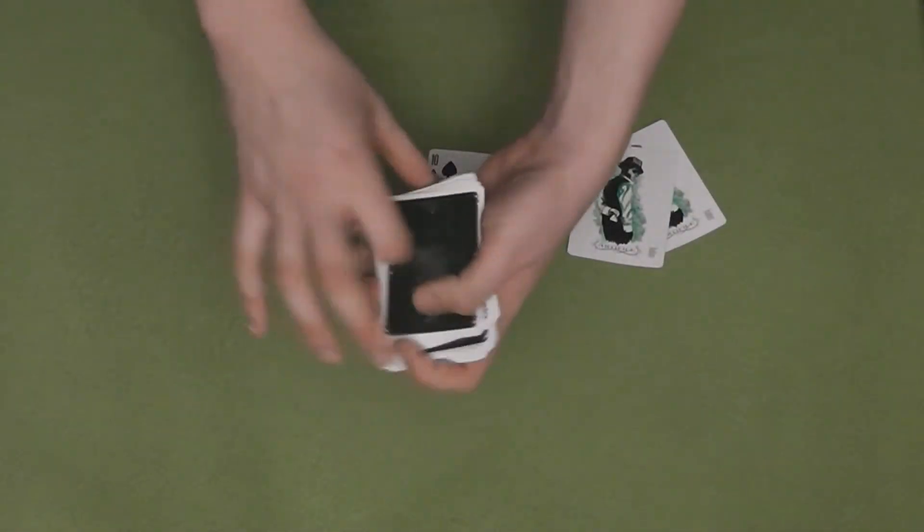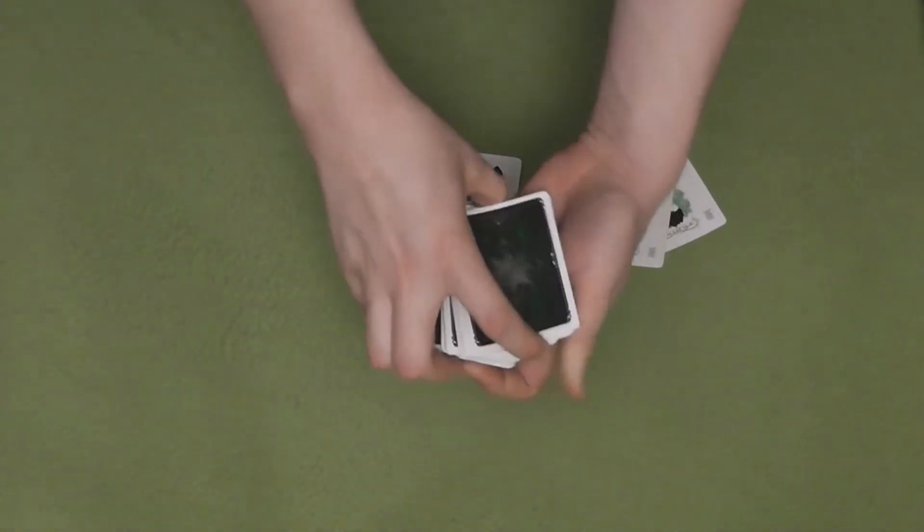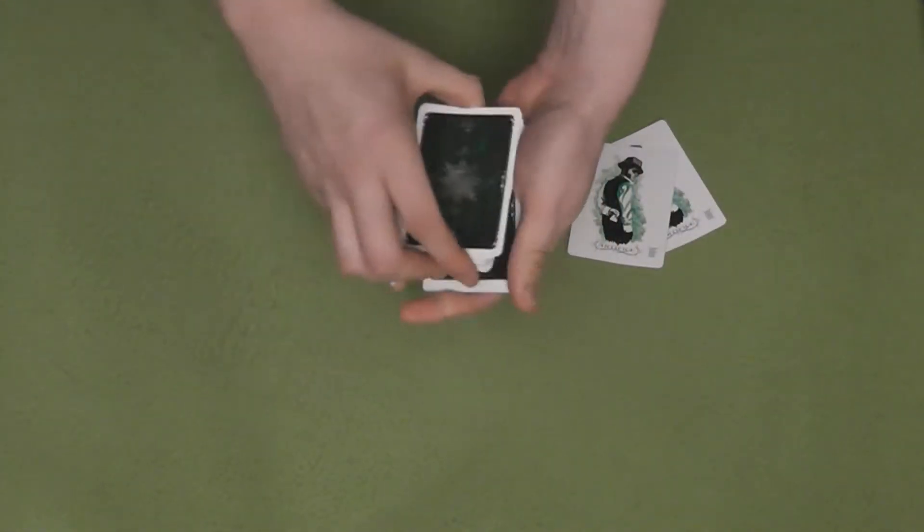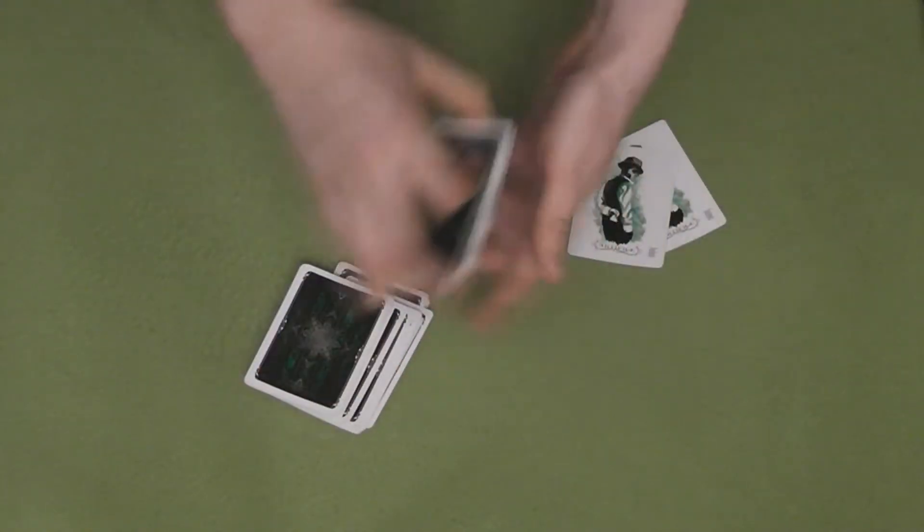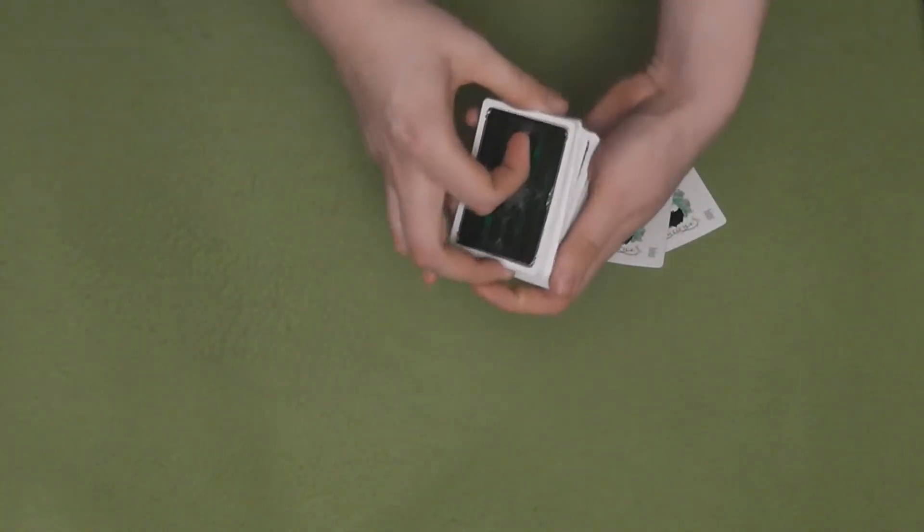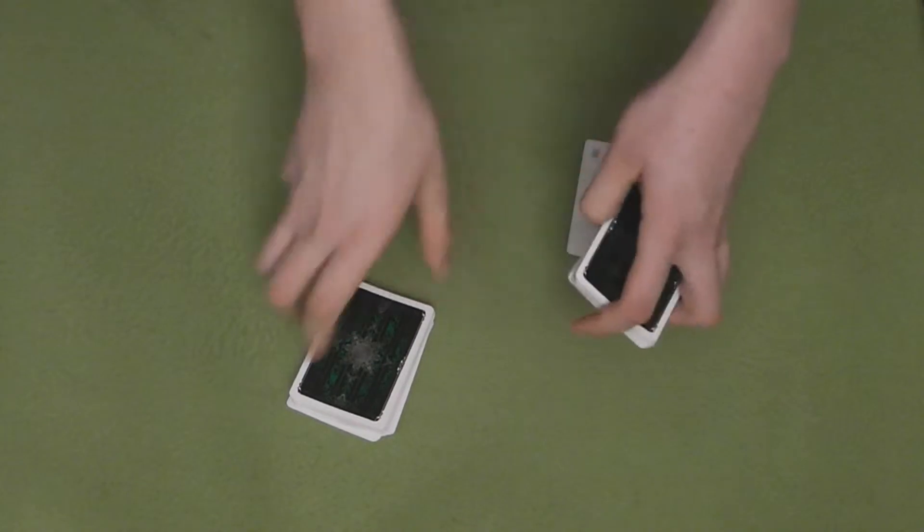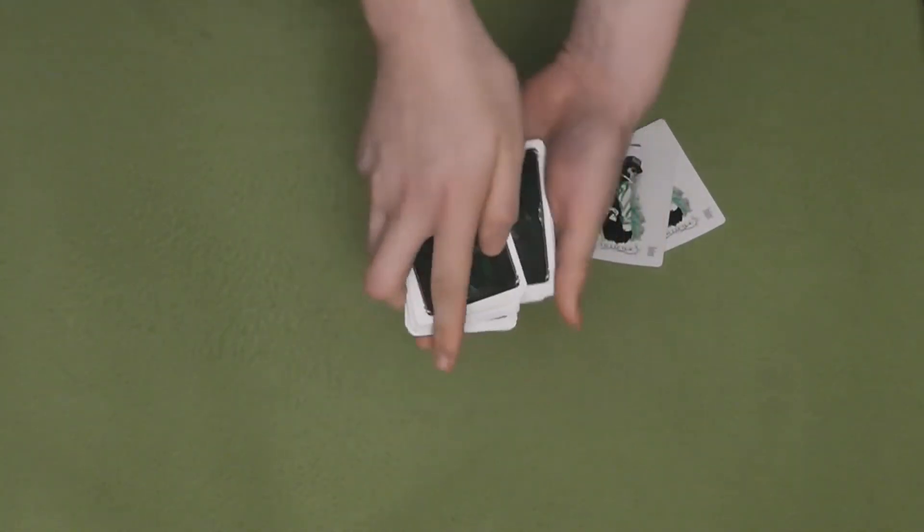I'll give them another go to make sure it wasn't just a fluke. I'll take the Ten and cut it deep into the deck, just as before. And then I'll give the deck another shuffle, as after all, that is what my hands were designed for, mixing up playing cards.